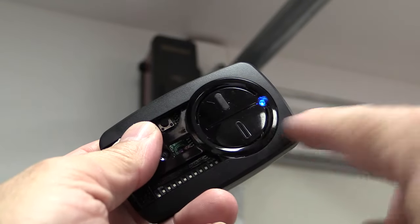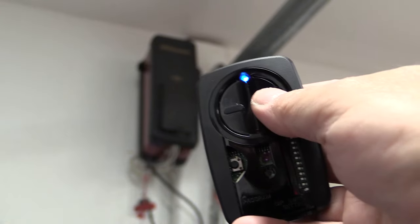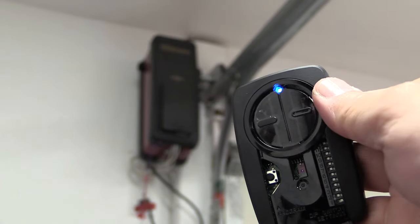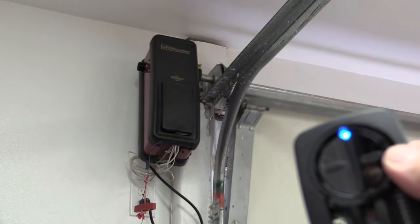Then decide which button you want to use to open your garage door and you're going to push it that number of times. Make sure after each press, you wait for the light to go steady again before pushing it another time.